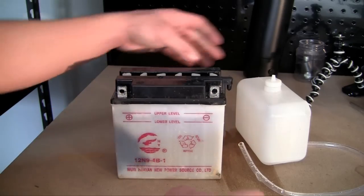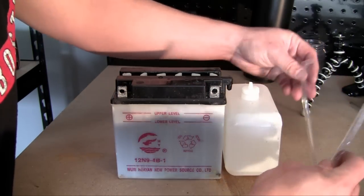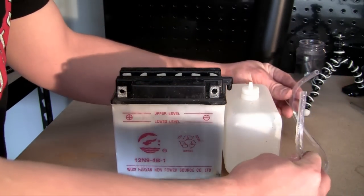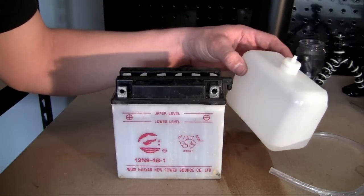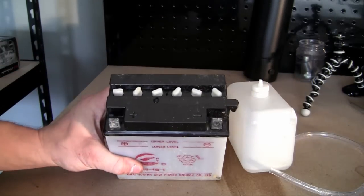So what you need to do whenever you get a kit like that is first open it up. You're going to see a couple things: a piece of tubing like this, a bottle of solution that looks a lot like water, and also your battery.